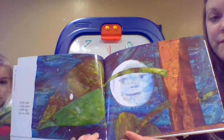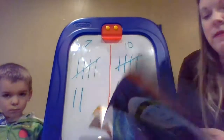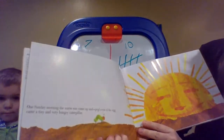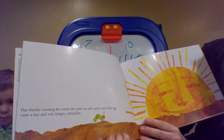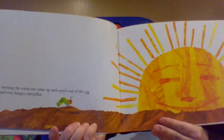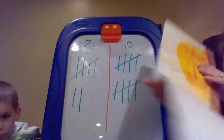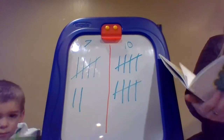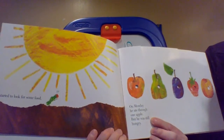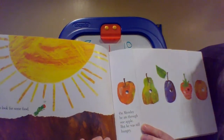In the light of the moon, a little egg lay on a leaf. One Sunday morning, the warm sun came up and pop! Out of the egg came a tiny and very hungry caterpillar. He started to look for some food. On Monday, he ate through one apple, but he was still hungry.